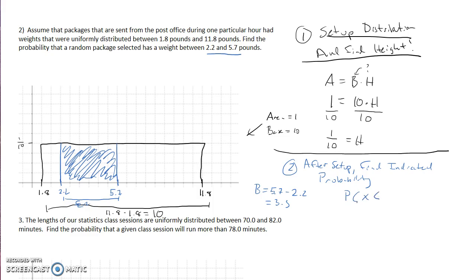So our probability - probability that x is actually, let's back this up. How would we write this in an inequality? Well it's between 2.2 and 5.7, so we're going to put 2.2 here, we're going to put our x in the middle, we're going to put 5.7 on the right.